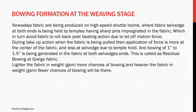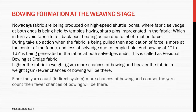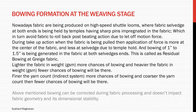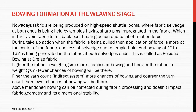Lighter the fabric in weight GSM, more chances of bowing; heavier the fabric in weight GSM, fewer chances of bowing. Finer the yarn count in the indirect system, more chances of bowing; coarser the yarn count, fewer chances of bowing. The above mentioned bowing can be corrected during fabric processing and doesn't impact fabric geometry and its dimensional stability.